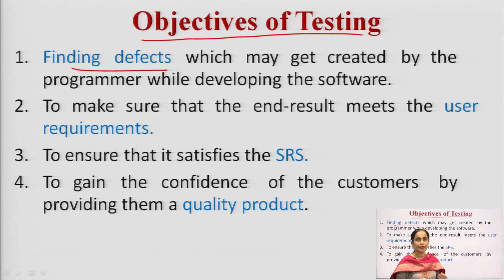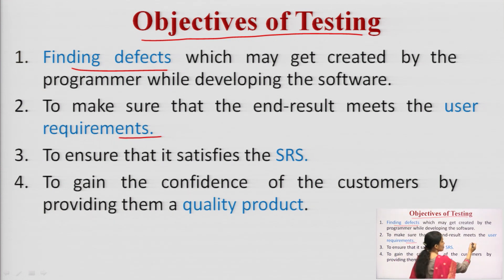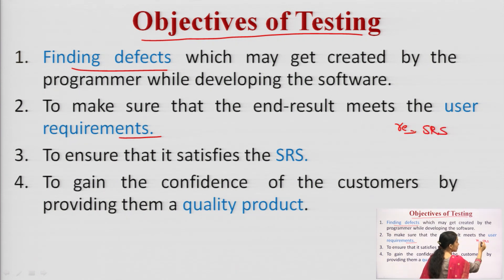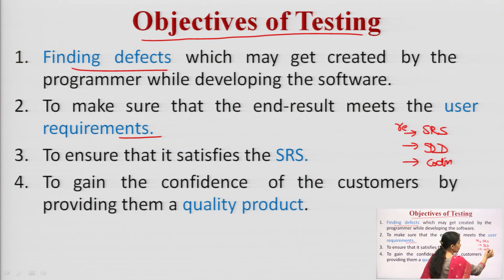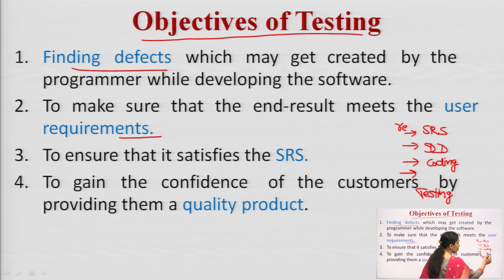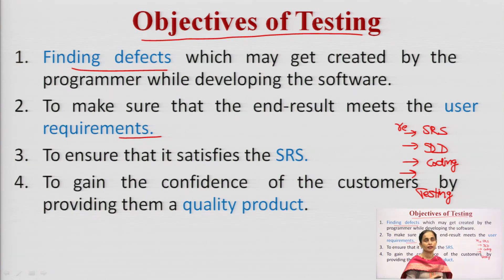Then, to make sure that the end result meets the user requirements. In the SDLC, we start with requirements and make the SRS, then the design document (DD), then we start coding. Then we come to testing — we start with unit testing, move to component testing, integration testing, and then acceptance testing.